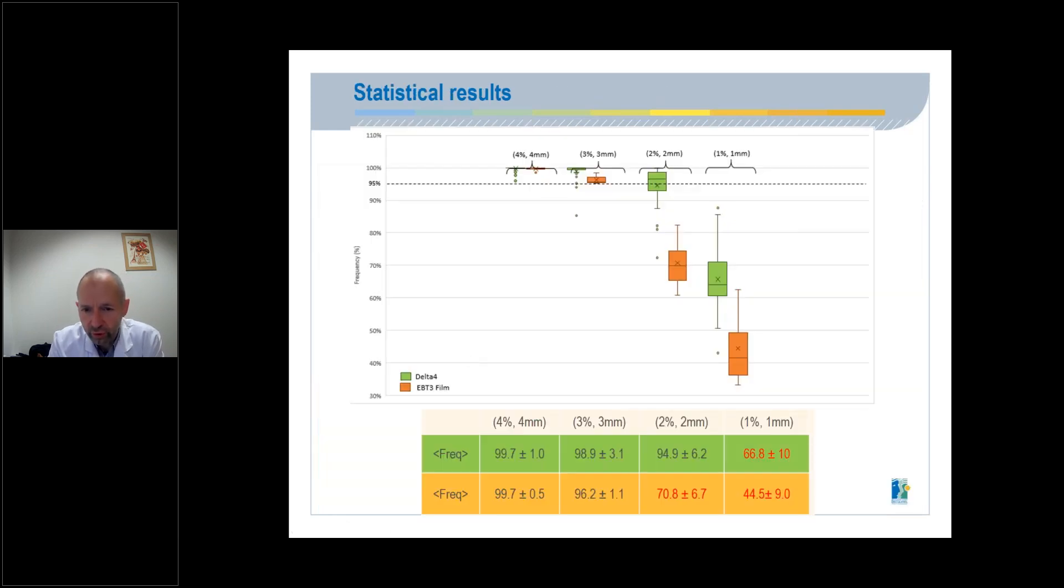Now, we have compared delta-4 and EBT-3 films result for the semi-radiation conditions. As we seen before, this figure represents the frequency of points satisfying the gamma index. Four criteria were analyzed. With 4% and 4 millimeters, delta-4 and films are quite similar, the average value for the frequency being about 100%. With 3% and 3 millimeters, the two systems are above the thresholds 95%. Very good results with 3% and 3 millimeters.